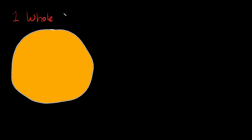What if I cut this pie in half — cut it straight down the middle? I'm going to try and draw a straight line down the middle. As you can see, we now have two equal pieces. We still have the one whole pie, but it's split into two equal pieces.